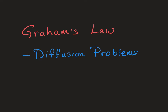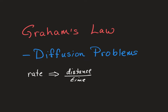In this video, we're going to talk about the application of Graham's Law to diffusion problems. The equation is the same, but there are a couple of differences. One, the rate in a diffusion problem is usually a velocity given in distance traveled over time. So rate is a speed of diffusion across that distance.